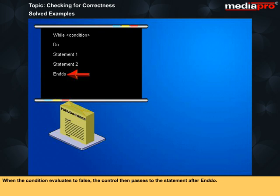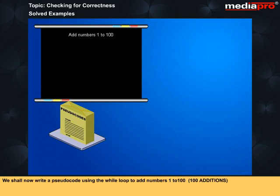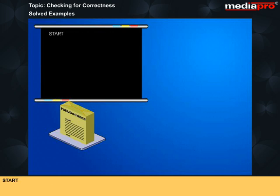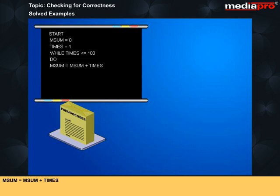The while statement is evaluated first. Until the condition returns true, the statements embedded between the do and end do are executed. When the condition evaluates to false, the control then passes to the statement after end do. We shall now write a pseudocode using the while loop to add numbers 1 to 100. Start, m_sum is equal to 0, Times is equal to 1, While times is less than or equal to 100, Do, m_sum is equal to m_sum plus time, Times is equal to times plus 1, End do, End.